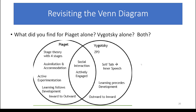Piaget and Vygotsky overlap a little bit, and you can take a look at how those things overlap. The one or two things really important to remember about what those guys had in common is that their theories hinge on social interactions being very important, and that students have to be actively engaged in order to develop — which is pretty well accepted in the education world as truth at this point.